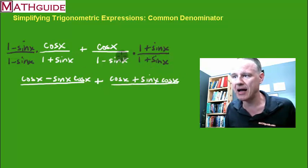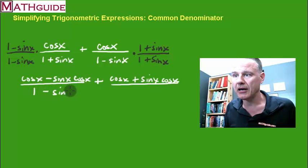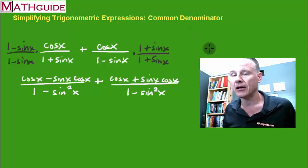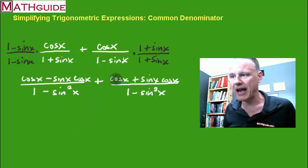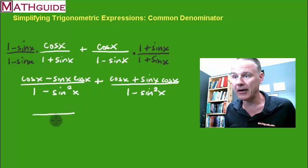Now I'm going to multiply the denominators. Multiplying (1 plus sine x)(1 minus sine x) gives 1 minus sine squared x, and likewise the other denominator also becomes 1 minus sine squared x — so they share a common denominator. If you're having trouble with that, you need to go back to multiplying binomials. Now since the two fractions have a common denominator, I can combine them by adding the numerators and keeping the same denominator.